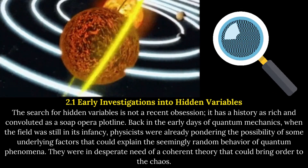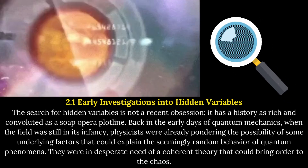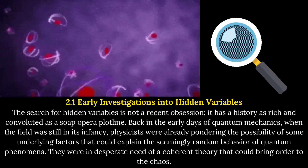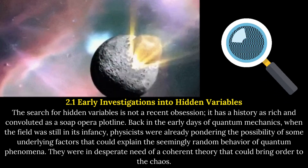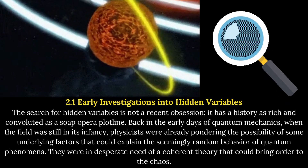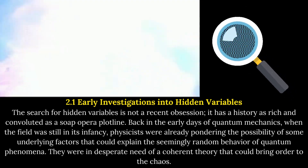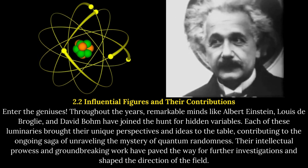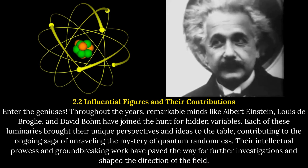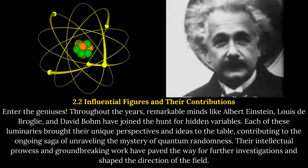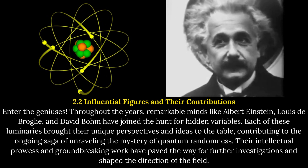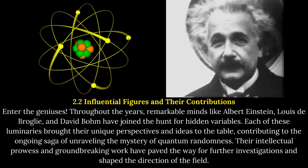The search for hidden variables is not a recent obsession — it has a history as rich and convoluted as a soap opera plotline. Back in the early days of quantum mechanics, when the field was still in its infancy, physicists were already pondering the possibility of some underlying factors that could explain the seemingly random behavior of quantum phenomena. They were in desperate need of a coherent theory that could bring order to the chaos. Remarkable minds like Albert Einstein, Louis de Broglie, and David Bohm joined the hunt, each bringing unique perspectives and contributing to the ongoing saga of unraveling quantum randomness.